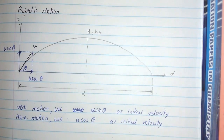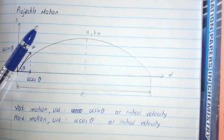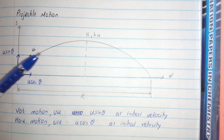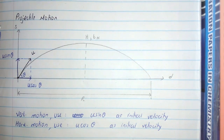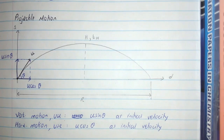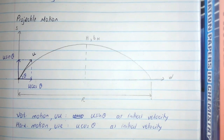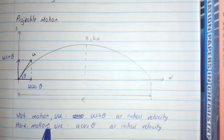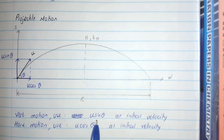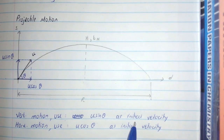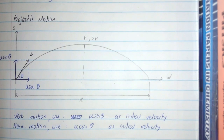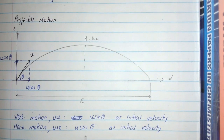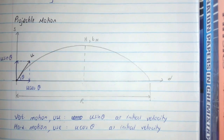For the horizontal component we resolve the vector, giving u cosθ, and for the vertical component it is u sinθ. We must bear in mind that for any vertical motion we will use u sinθ as the initial velocity, and for any horizontal motion we will use u cosθ as the initial velocity.